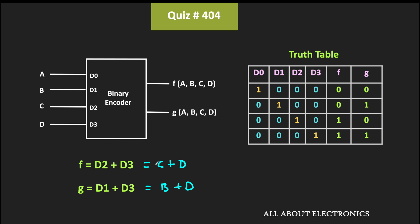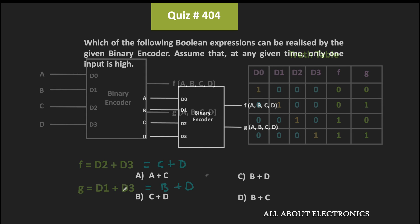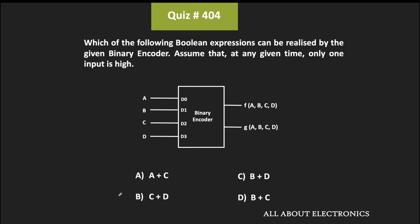So this is the boolean expression of the outputs f and g. That means using the given binary encoder, we can realize these two expressions. Therefore, for the given equation, these b and c are the correct options.